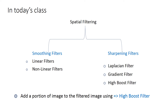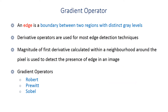In today's class we are going to study high boost filtering. Apart from that, we are going to look at the gradient filter — the first-order derivative. We will see how to enhance edges, which are boundaries separating two regions that have different gray values or intensity levels. We use a derivative operator on this, and most edge detection techniques like Robert, Prewitt, and Sobel actually take the magnitude of the first derivative, calculated within a neighborhood around the pixel where we are trying to detect the presence of an edge.